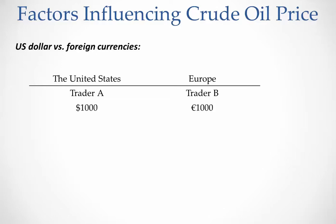I'm going to explain that with a simple example. Let's assume there are two traders who trade crude oil through crude oil futures contracts. Trader A is in the United States and trader B is in Europe. Trader A has $1,000 and trader B has 1,000 euros. Let's assume the exchange rate between US dollar and euro is one to one, meaning one dollar is equivalent to one euro.